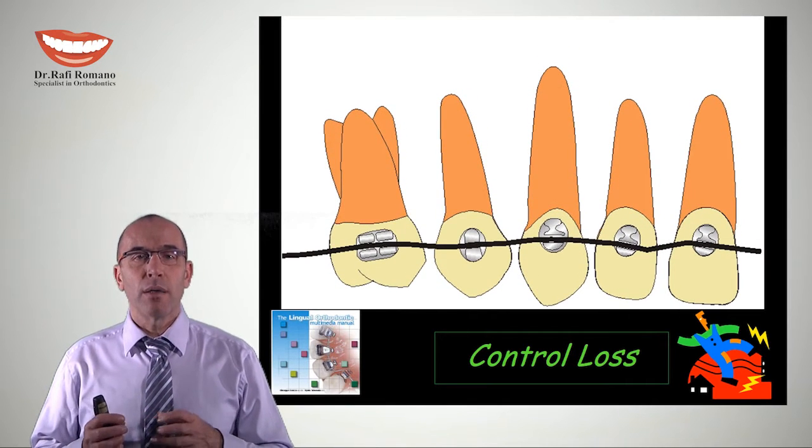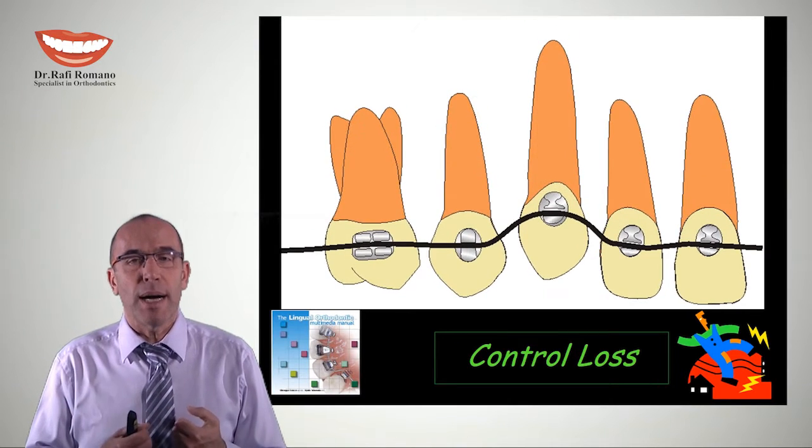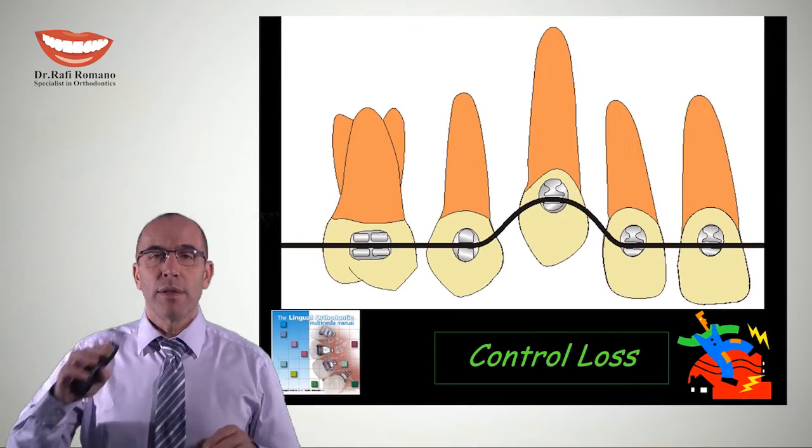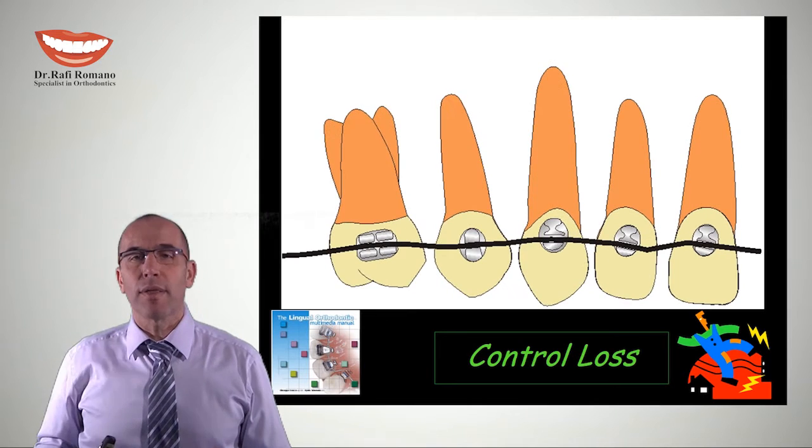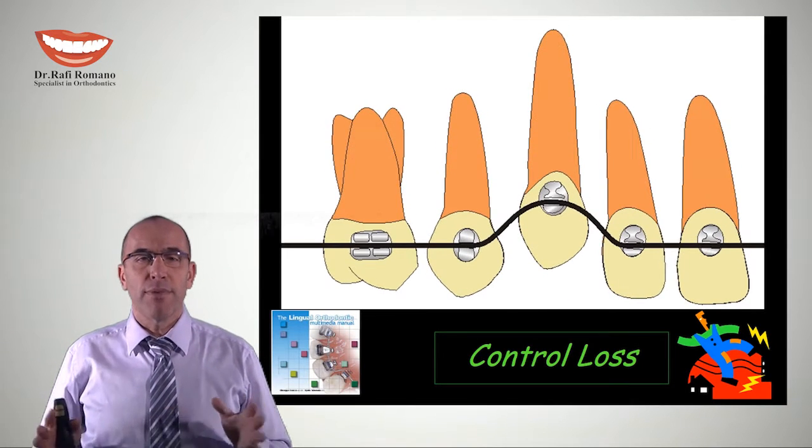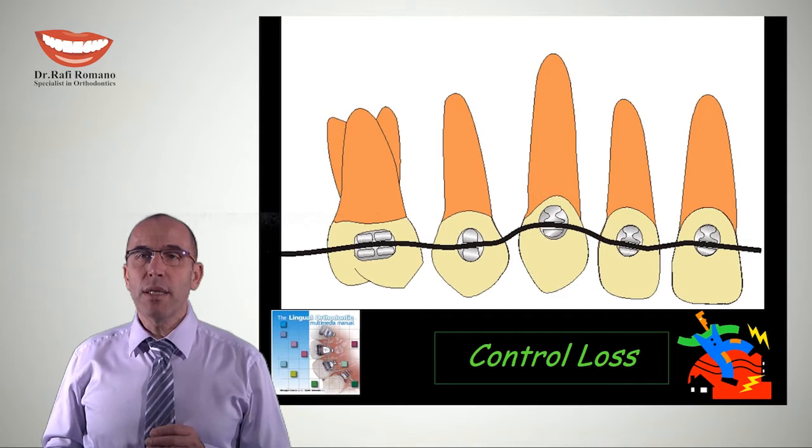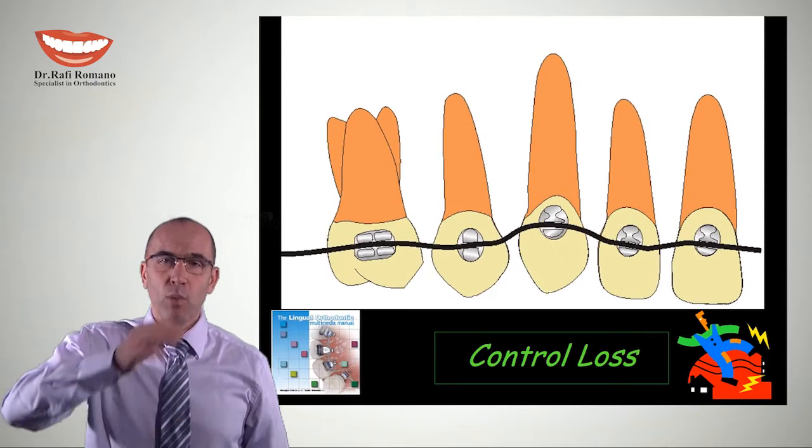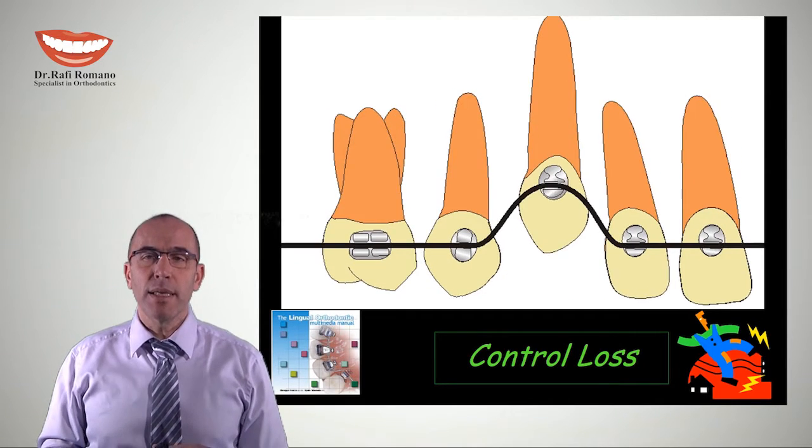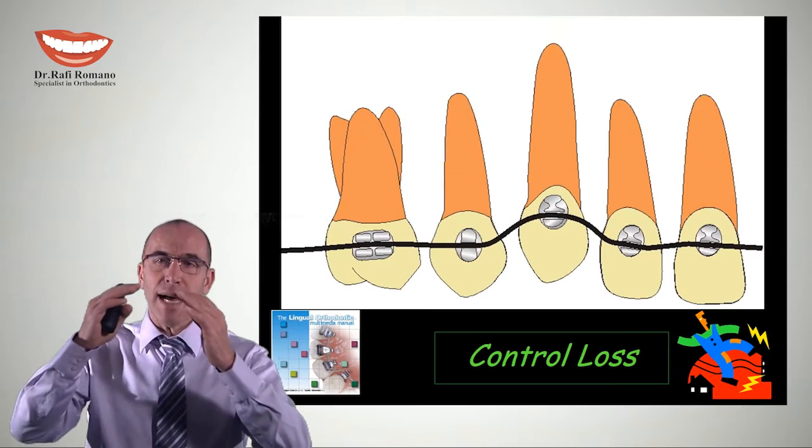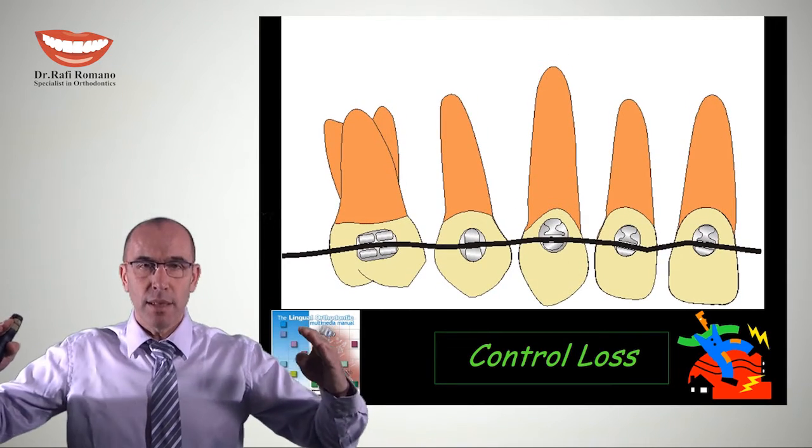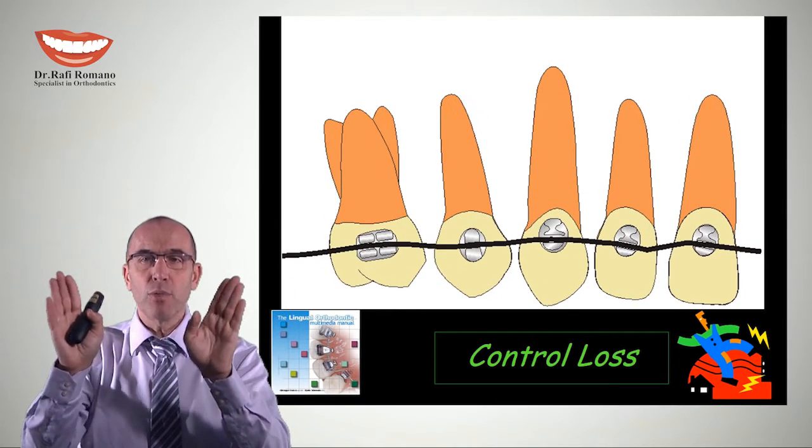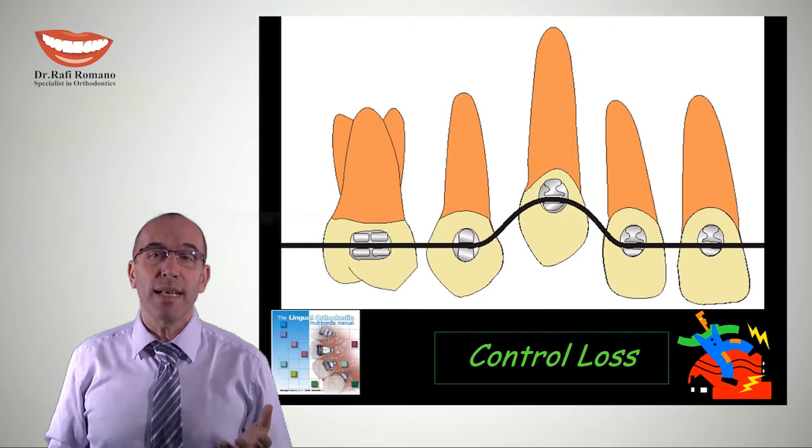Many times manufacturers convince us to use smart wires that can be bent around the teeth to work very fast. For example, with a blocked-out canine that is up or out, we put a wire that connects all the teeth. The wire between the cuspid, lateral, and premolar is bent, and these bends create unwanted movements of the neighboring roots.